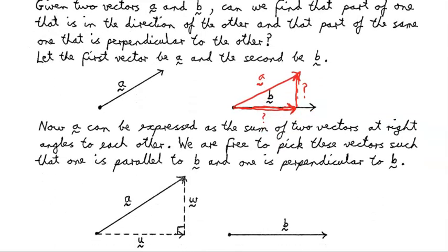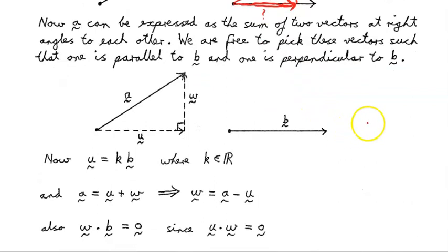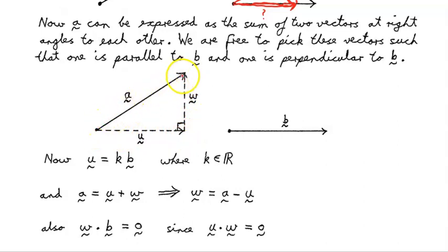To start that process, we can express the vector A as the sum of two vectors at right angles to each other. We can express this arbitrary vector A as the sum of two other vectors, which we will call U and W, that are at right angles to each other. So vector U plus vector W gives us vector A — we've decomposed vector A into two vectors at 90 degrees to each other.